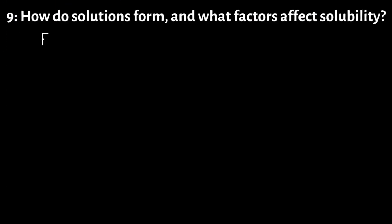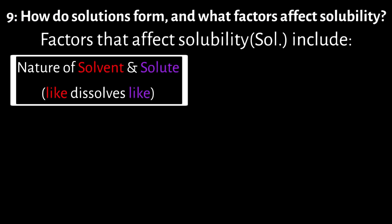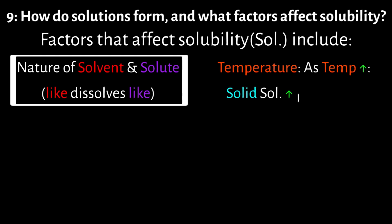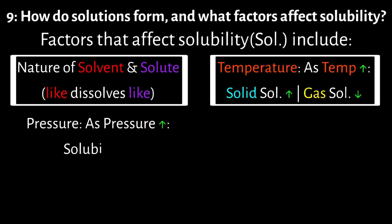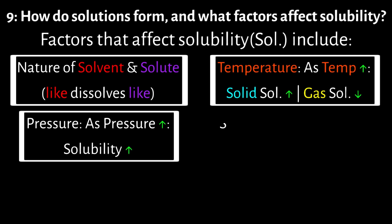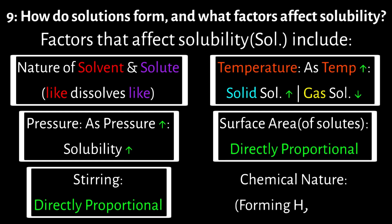Factors that affect solubility include: nature of the solvent and solute (like dissolves like); temperature — as temperature increases, solid solubility increases and gas solubility decreases; pressure — as pressure increases, solubility increases; surface area of solutes, which is directly proportional; stirring; and chemical nature, such as forming hydrates.